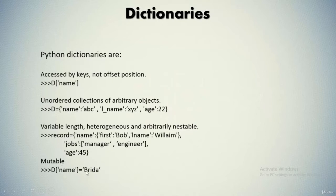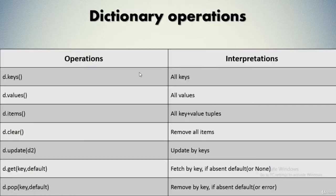Dictionaries are mutable, which means you can change the value of a particular element associated with a particular key. For instance, with the name key associated with value 'abc', you can change the value associated with this key. There are also various operations you can perform on a dictionary.